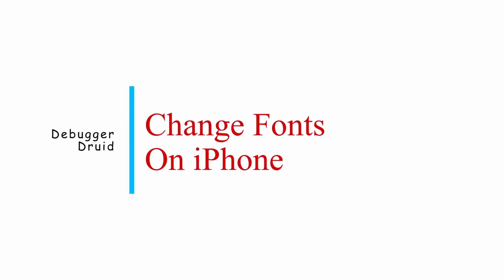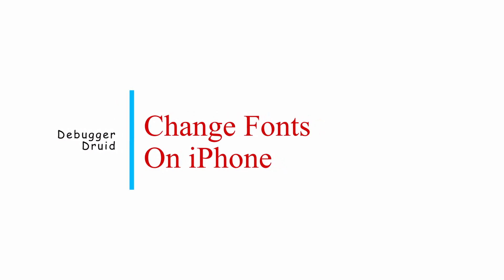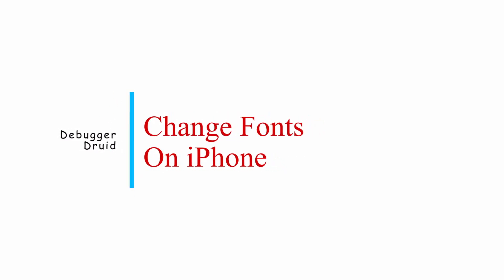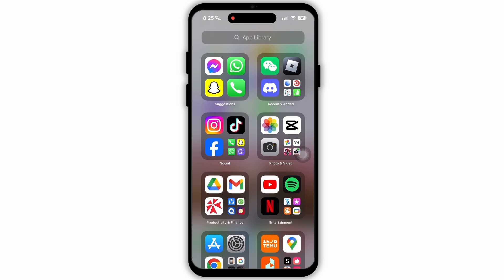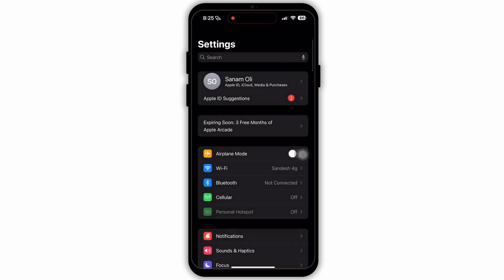How to change fonts on iPhone. If you want to change the font style on your iPhone while texting or doing other things, then you need to follow this method. Firstly, navigate to the Settings app and open it on your device.